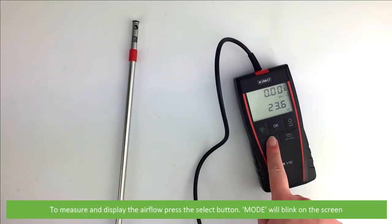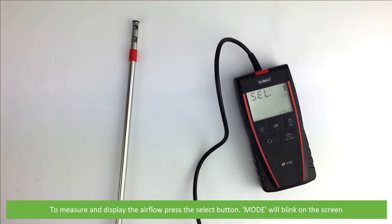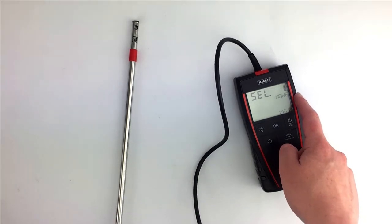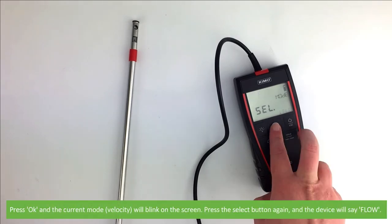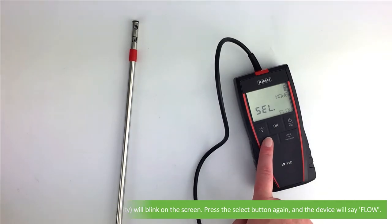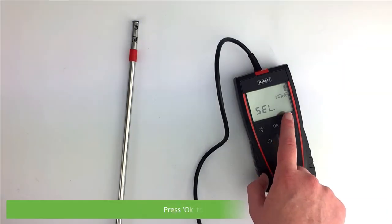To measure and display the airflow, press the select button. Mode will blink on the screen. Press OK and the current mode velocity will blink on the screen. Press the select button again, then the device will say flow. Press OK to accept.